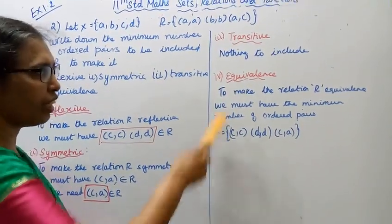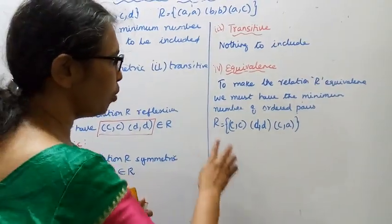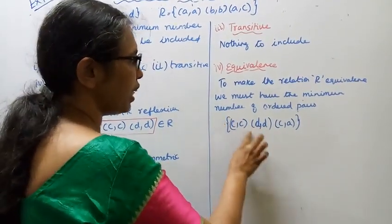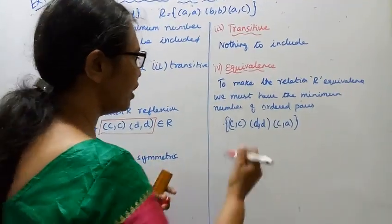For equivalence, we must include (c,c), (d,d), (c,a) to make R an equivalence relation.